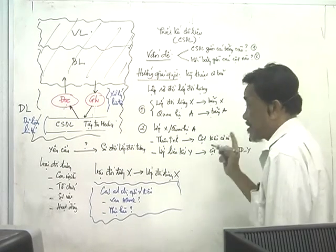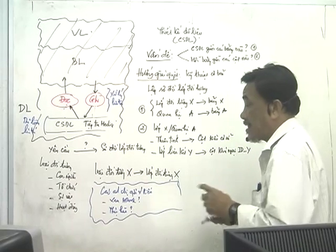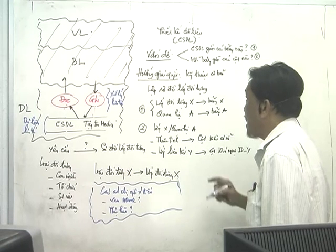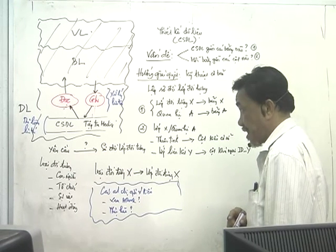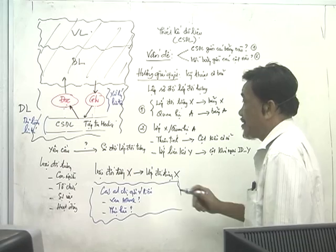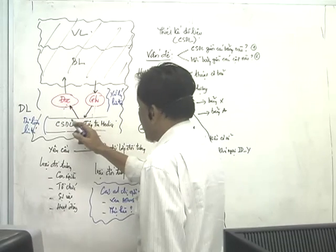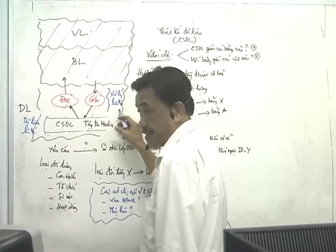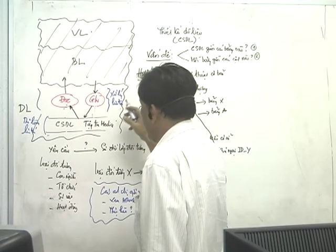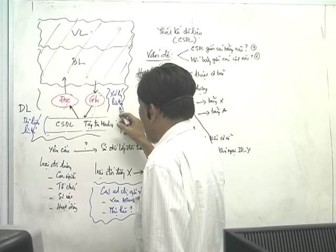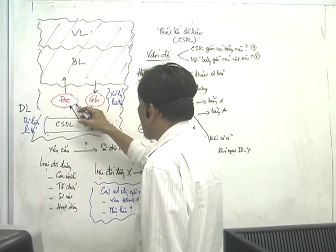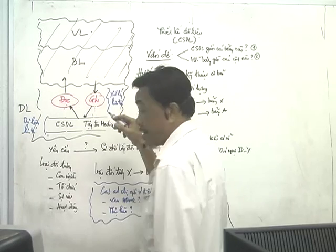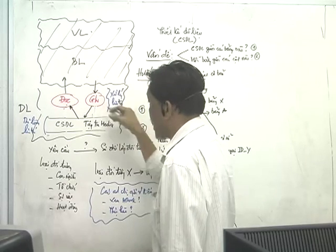Trong tập tin media thì sẽ có rất nhiều loại: phim, hình ảnh, âm thanh, PDF, đủ thứ hết. Khi nói đến thiết kế một thành phần lưu trữ, chúng ta đi thiết kế dữ liệu lưu trữ và thiết kế xử lý lưu trữ. Thiết kế xử lý lưu trữ là chúng ta quyết định có bao nhiêu hàm đọc, bao nhiêu hàm ghi. Phần này không cần tài liệu, liên quan đến lập trình, là phần chỉ thuật thôi.